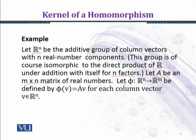Let phi from R^n to R^m be defined by phi(v) equal to matrix A times v, for each column vector v belonging to R^n. Here you can see that the map phi is defined by multiplication of matrices — A is multiplied by v.